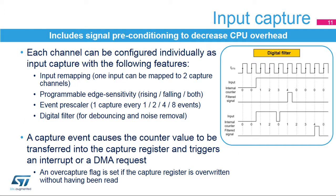This slide describes the input capture features. Each channel can be individually configured as input capture with a number of signal conditioning options. An input can be mapped on two capture channels, typically to differentiate rising edge from falling edge capture. The edge sensitivity is programmable and can be rising edge, falling edge, or both edges. An event prescaler allows capture of one event every two, four, or eight events. This decreases the CPU burden when processing high-frequency signals and allows the measurement to be more accurate, since it is performed over multiple input signal periods. Spurious transition events, due to noise or bounces, can be removed using a programmable digital filter.